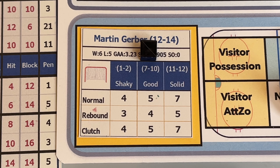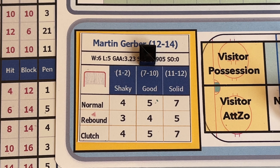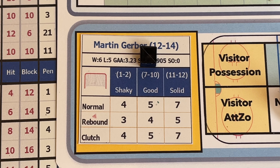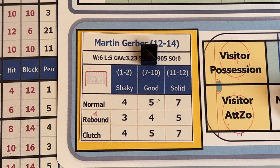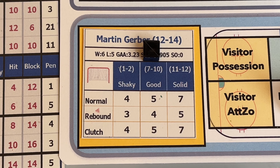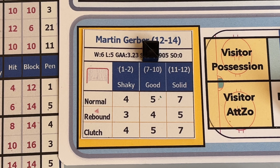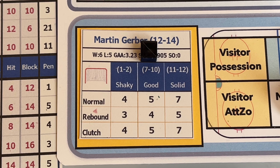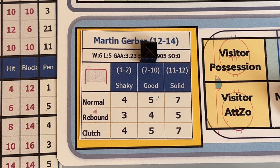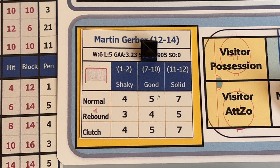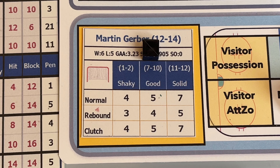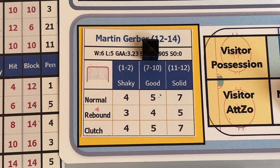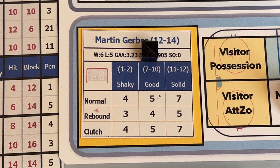You can see he rolls a d12 to start with. On a 1 to 2 he might be a little bit shaky, so his rating's a little bit lower. On an 11 to 12 he's a little more solid and could have a better game. He's rated for normal, which covers every shot in the game other than a rebound shot, and then clutch time, which is the last 5 minutes of the game — or in Quickdex Hockey, the last segment, which lasts about 7 cards. So Gerber rolled good, and his normal rating is a 5.